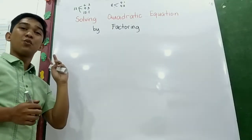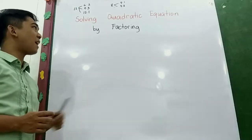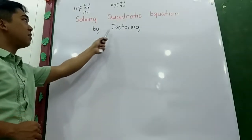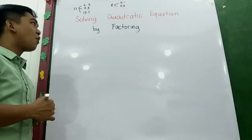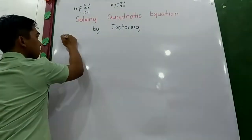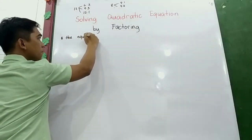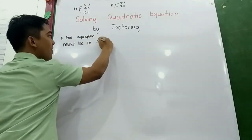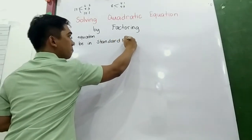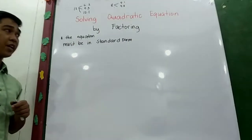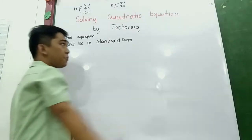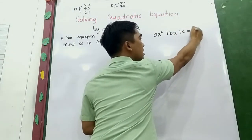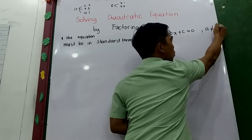A quadratic equation has a degree of 2. To solve it, we use factoring. Put in mind that in solving the quadratic equation by factoring, the equation must be in standard form before solving. The standard form is ax² + bx + c = 0, where a must not be equal to zero.